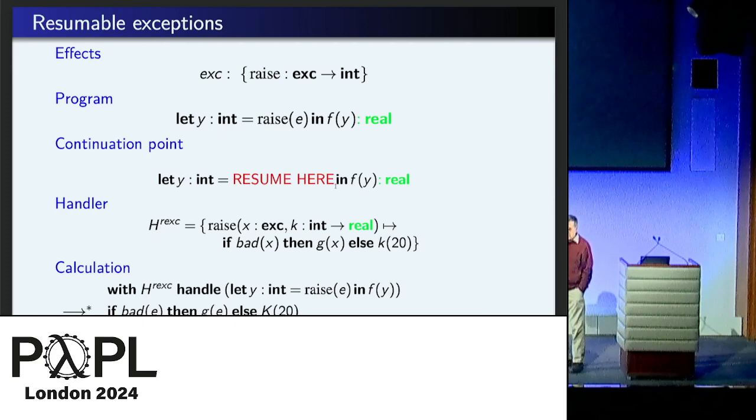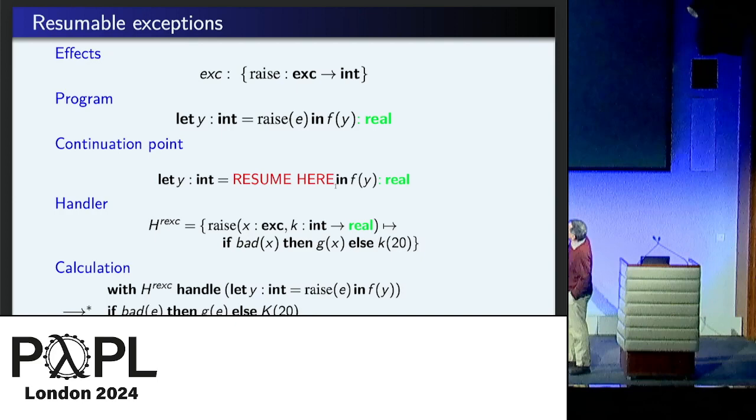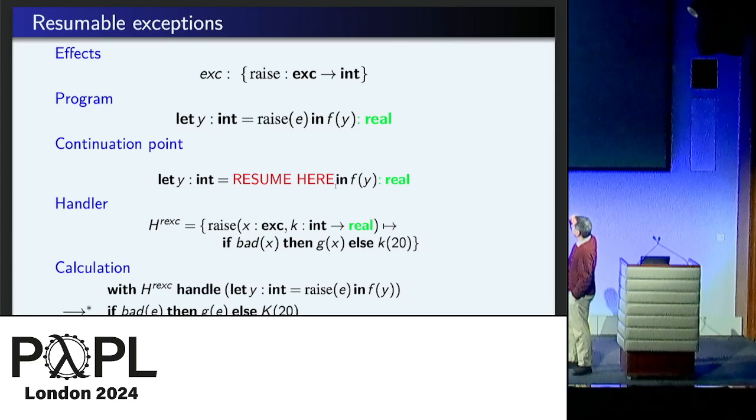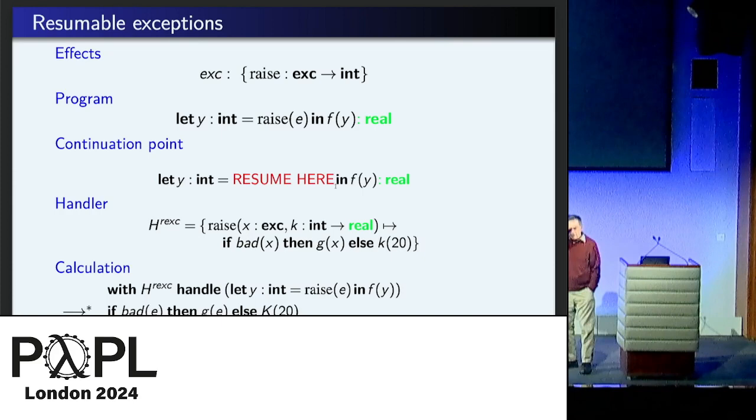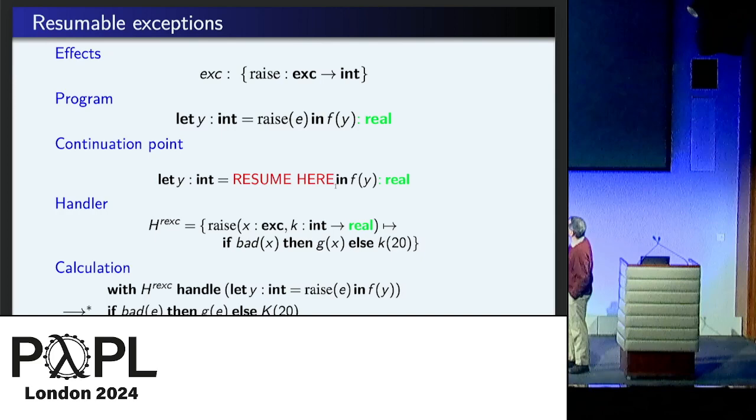So if you look at that let y be raise e and f(y), if raise e were to come back to the call site, it would come back to where I've written it in red. So the continuation would be, you'll plug in some integer for resume here, and you carry on with F applied to that integer. So now, here's a different handler. It takes exception, but it's also given the continuation.